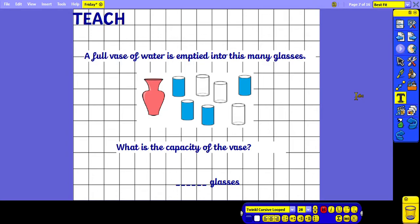This time, a full vase of water is emptied into this many glasses. What is the capacity of the vase? So we can see in the picture we've been shown one, two, three, four, five, six, seven glasses. However, not all glasses have been filled with water from the vase. Only four glasses have been filled with water, so that tells us that the capacity of the vase is four glasses.